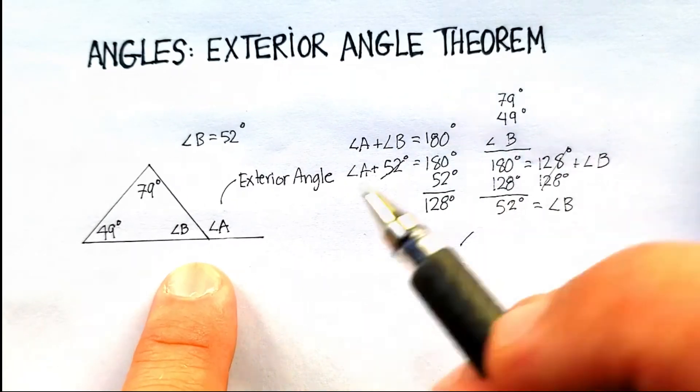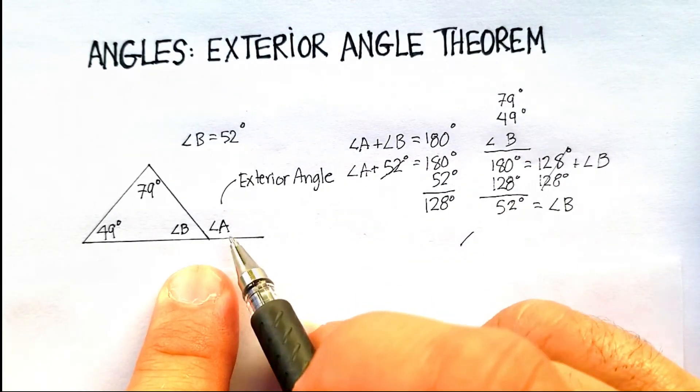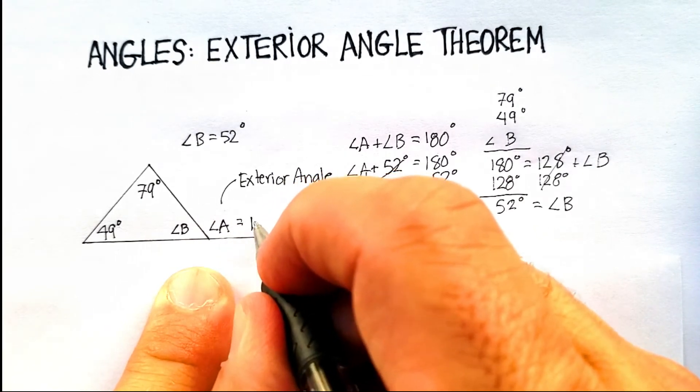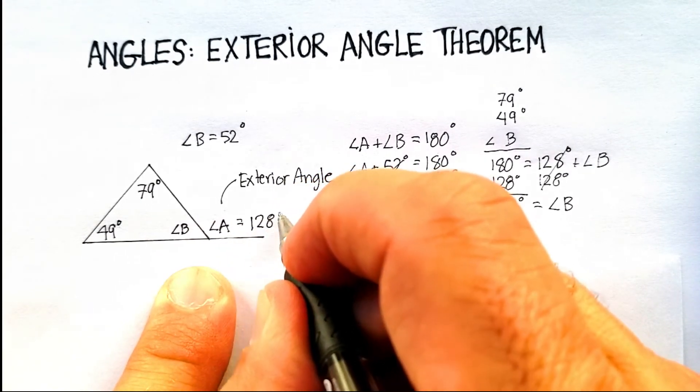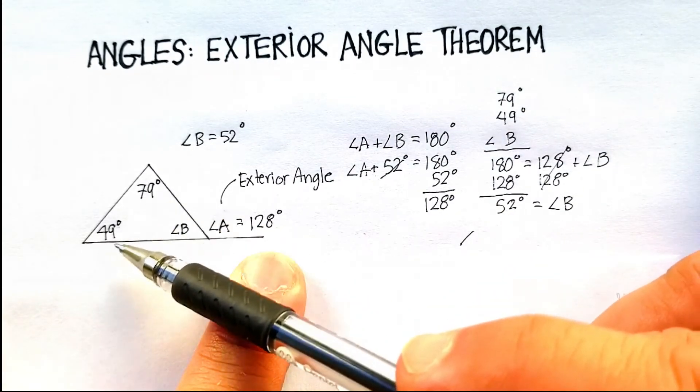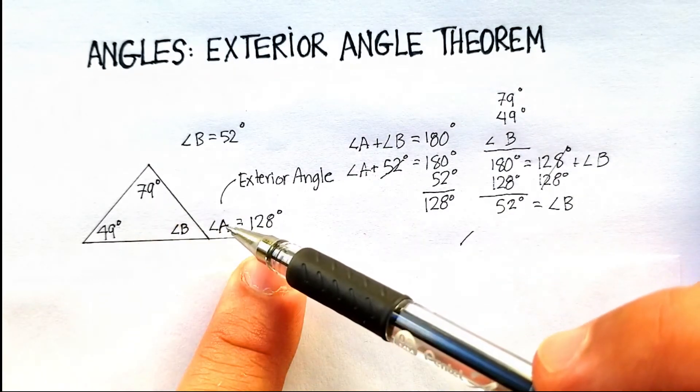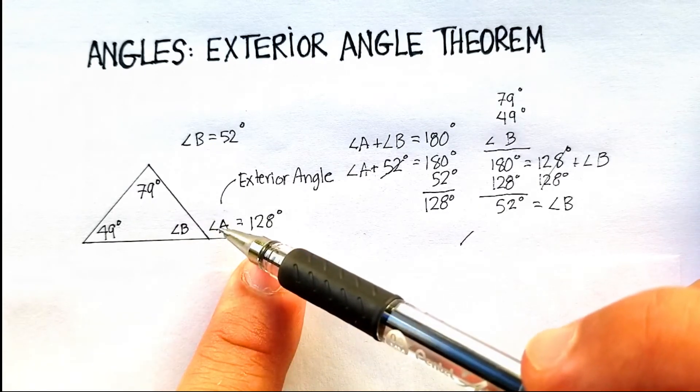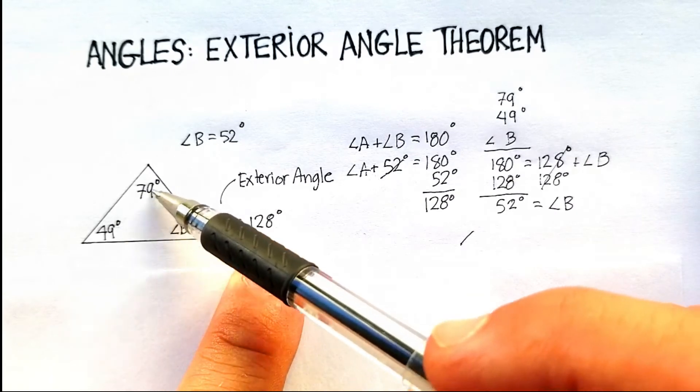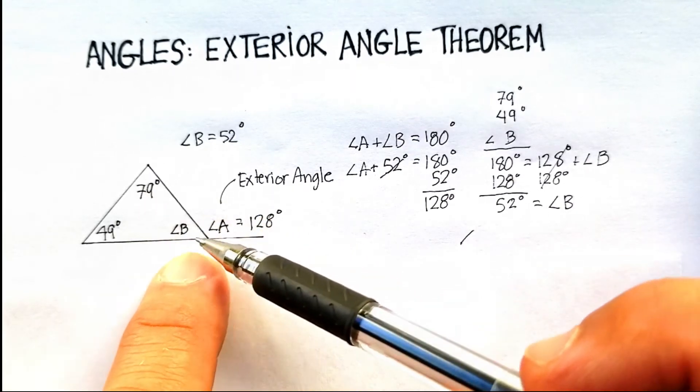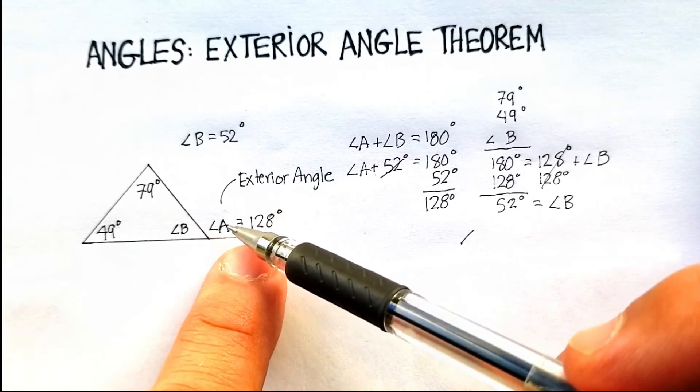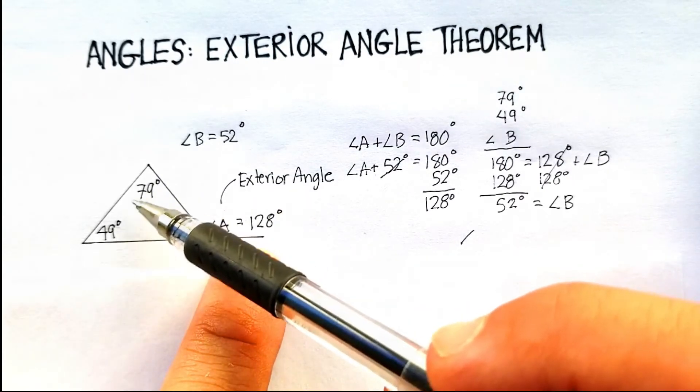So according to this, angle A should be equal to the exterior angle to 128 degrees, which happens to be the sum of the two opposite angles from here. So our exterior angle is proved two ways. We use the triangle sum theory, which is right here. And we use the external angle theorem, which is right here, that this is always equal to the two opposite angles.